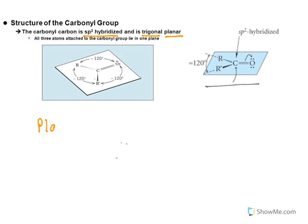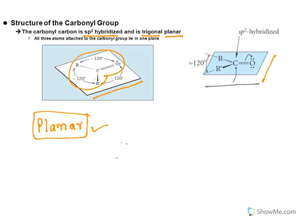Let us start with planar. What do you understand by planar? Any molecule, if it is perfectly flat in a single plane, is called a planar molecule. Look at this — the carbonyl compound is lying perfectly on that plane. All the atoms will be lying on a single plane; nothing comes out of that plane. Then it is called a planar molecule.